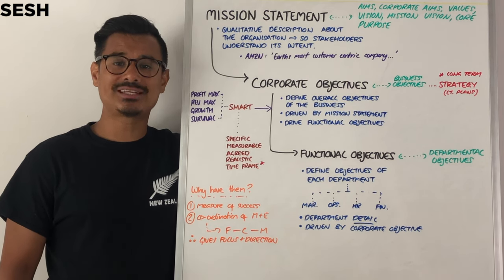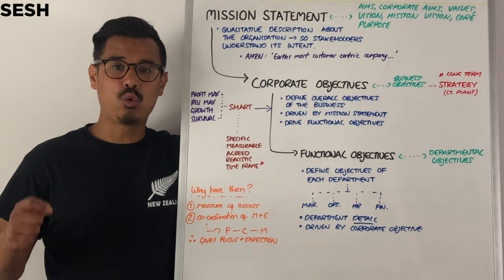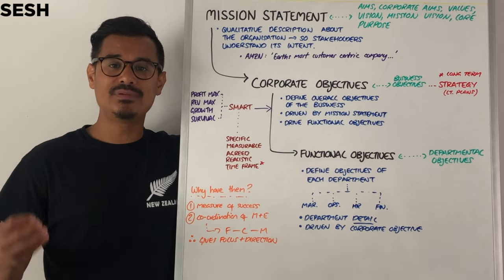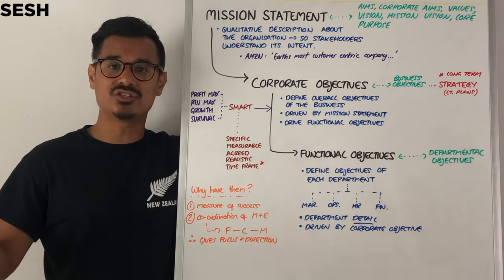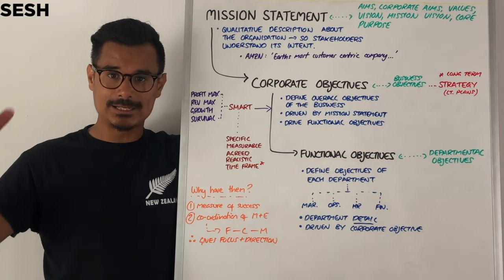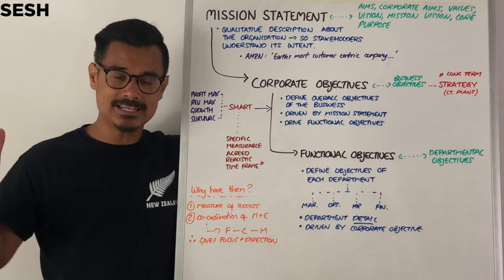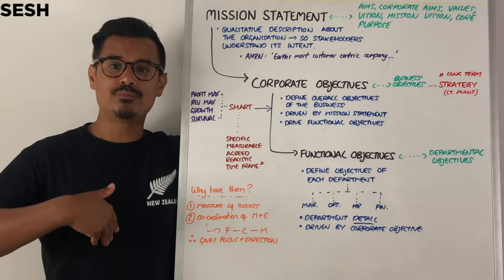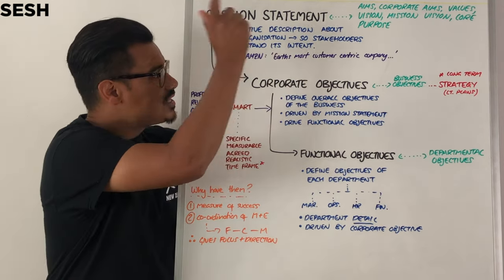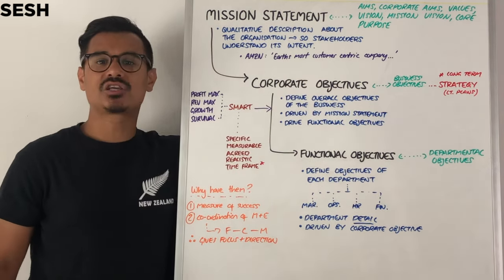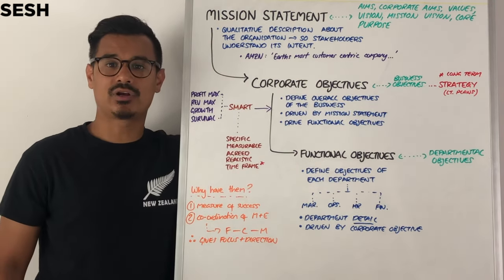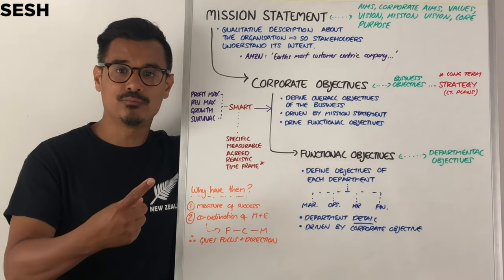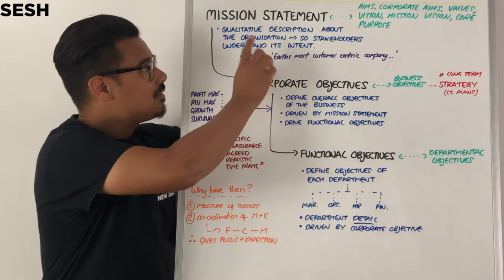The mission statement is essentially a qualitative, written description of what the business intends to do so stakeholders understand its intent. An example of a mission statement would be in the case of Amazon — that it's Earth's most customer-centric company.